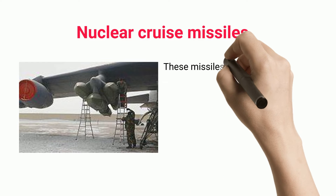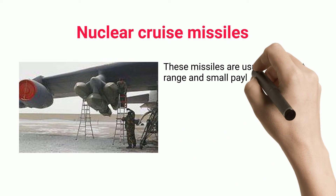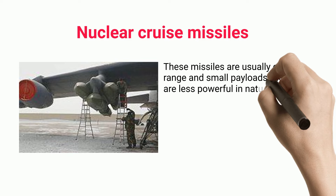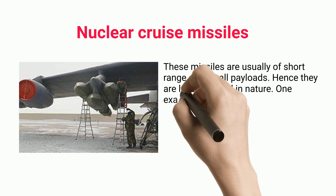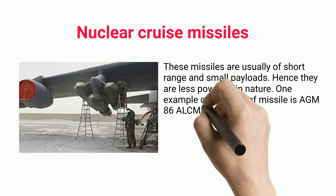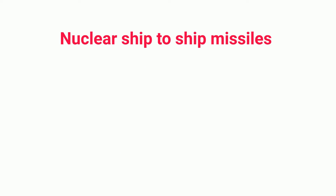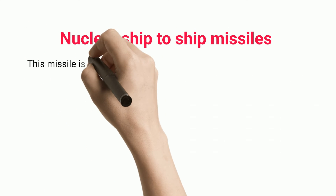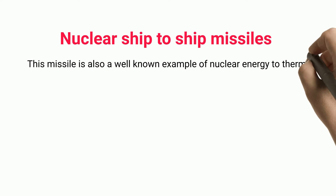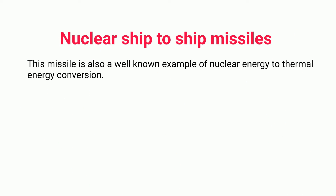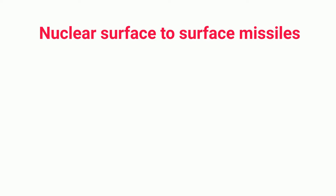Nuclear cruise missiles are usually of short range and small payloads, hence they are less powerful in nature. One example of this type of missile is the AGM-86 ALCM. Nuclear ship-to-ship missiles are also a well-known example of nuclear energy to thermal energy conversion.